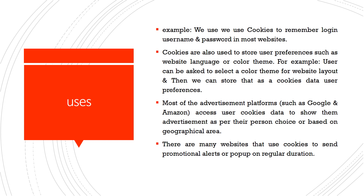Cookies are also used to store user preferences such as website language, color, or theme. For example, a user can be asked to select a color theme or website layout — the background color and everything — and that is stored in the cookie. Most advertisement platforms access user cookie data. For example, Google and Amazon advertisements will store your information and repeatedly show you data relevant to your activity. Remembering things like calendar events can also be done with the help of a cookie.